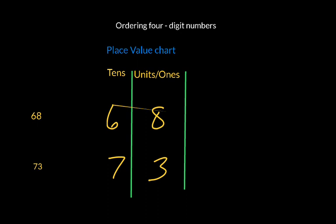If we were going to break that apart into tens and units, we would write 68 as 60 plus 8, and if we were going to break 73 apart we would write it as 70 plus 3. Doing it this way you can clearly see that 70 is larger than 60.